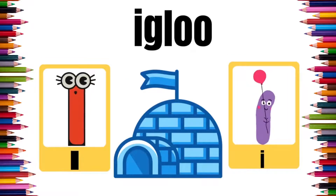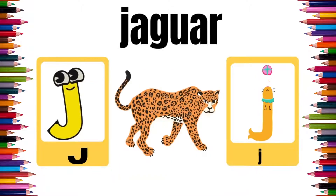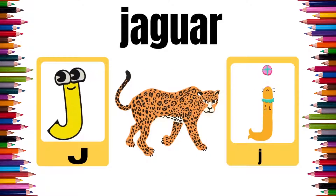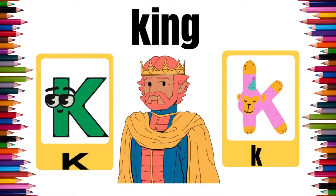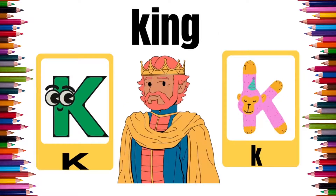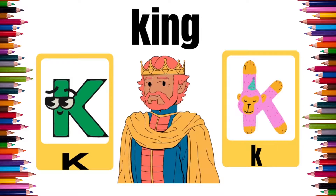I is for Eagle. E, E, Eagle. J is for Jaguar. J, Jaguar. K is for King. K, K, King.